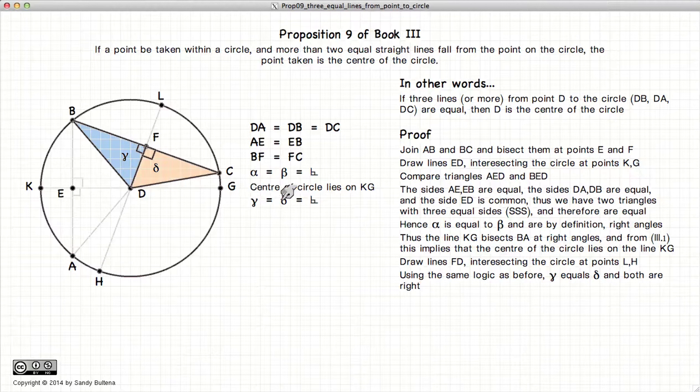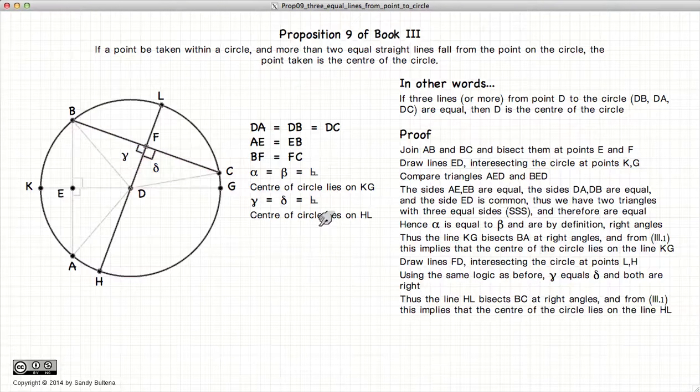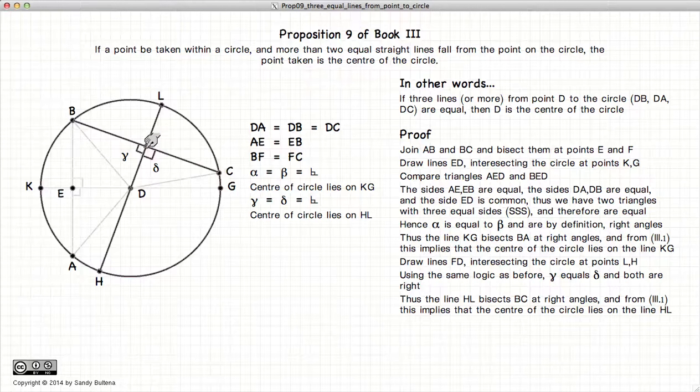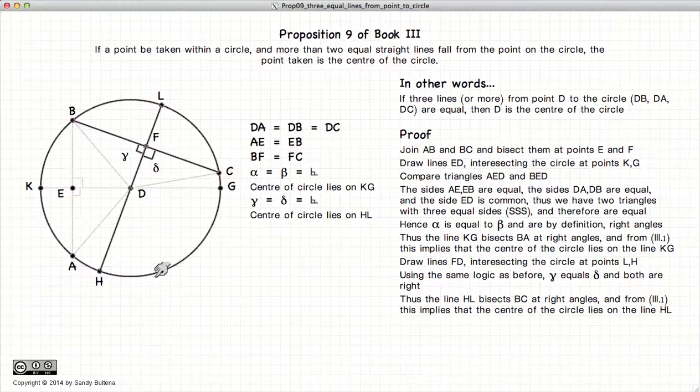And again, if gamma is equal to delta, it must also be a right angle. Again, from Proposition 3.1, if we have a chord that's bisected and a line drawn through it at right angles, then the center of the circle must lie on the line LH.